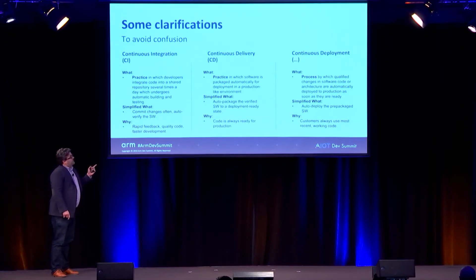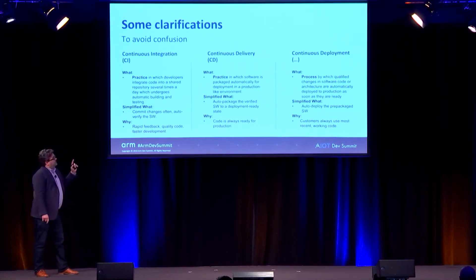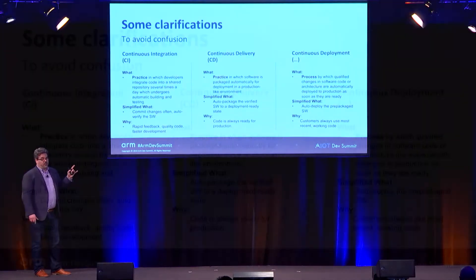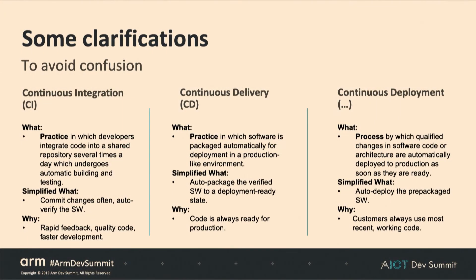With continuous delivery, the software is actually packaged and deployed in a production environment — that would be pre-production. Then you have continuous deployment, where the architecture is automatically deployed as soon as it's ready, essentially an automated version of continuous delivery.